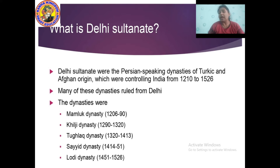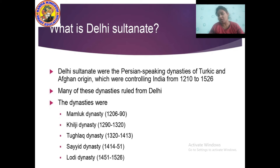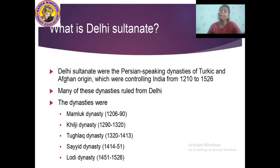After the Lodi dynasty, slowly and steadily the Mughal empire came to India, conquered it, and started ruling. The Mughal empire was totally very different from the Delhi Sultanate.